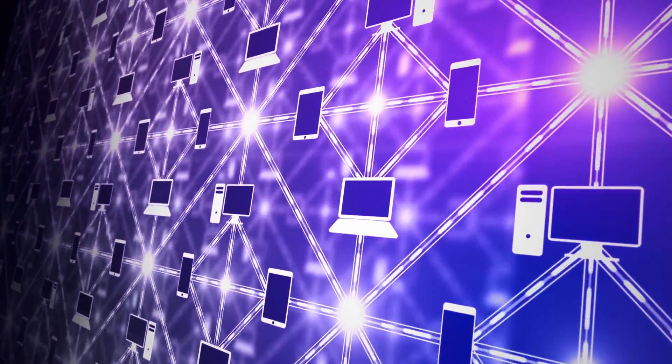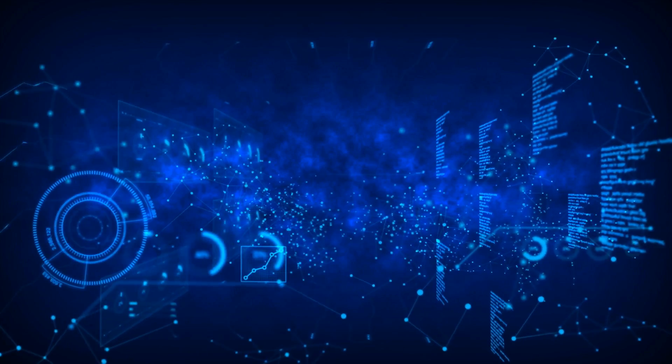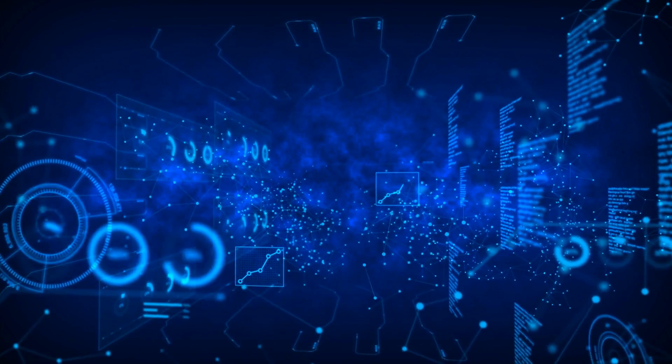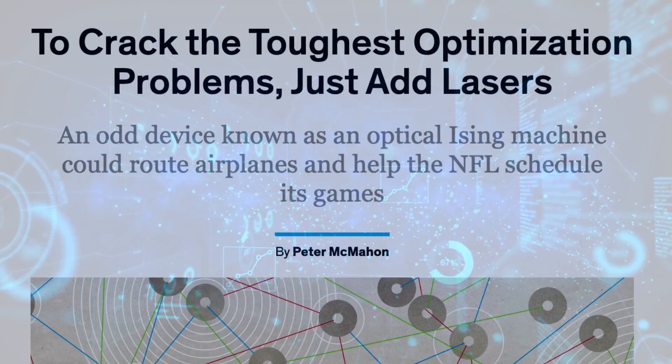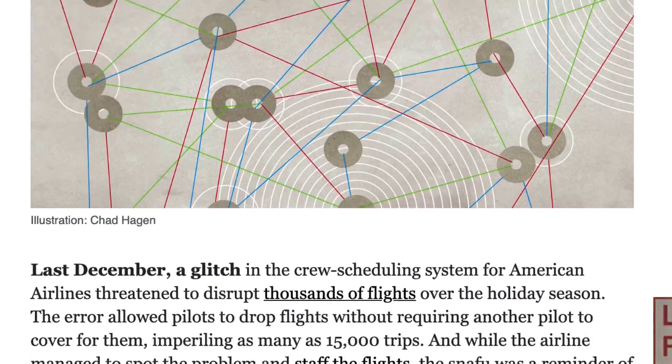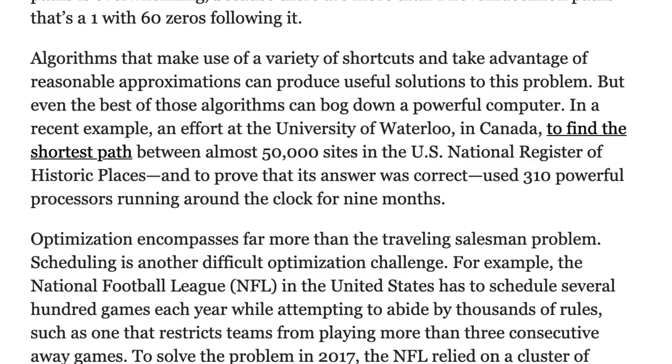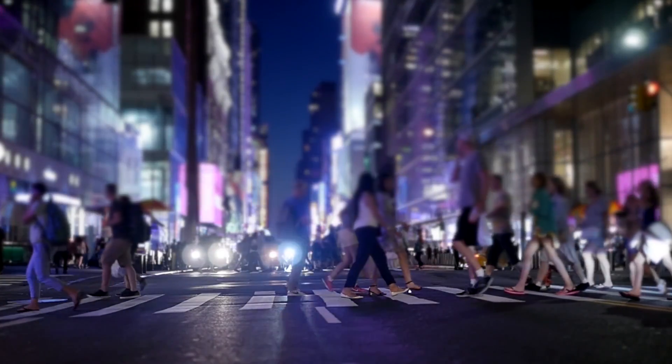This kind of math is so important that new technology, beyond just better computers, is being built to solve these problems. As an example, I came across a few articles on something known as an optical icing machine that might be able to use lasers to solve optimization problems. I'll link this below for those who want to read a more detailed explanation. But hopefully you realize that without the study of optimization, our world would be drastically different. Oh, and by the way, there's like one or two other optimization types I didn't get to, but I only had so much time for this video.